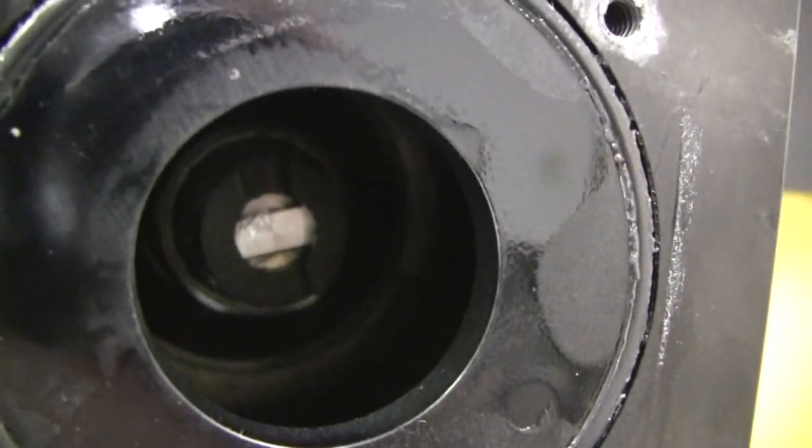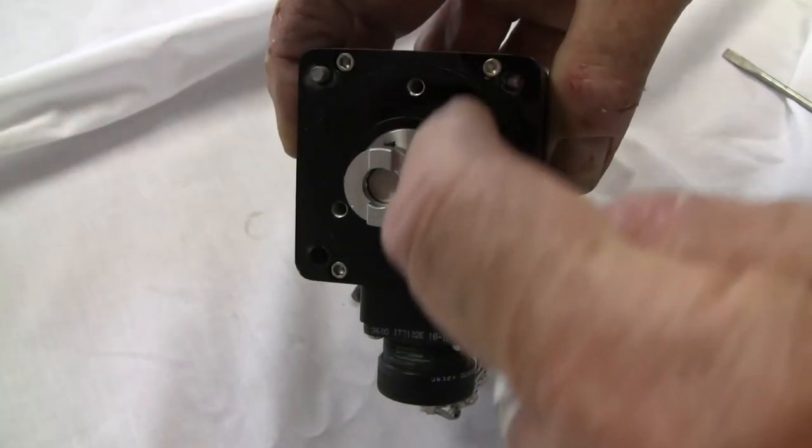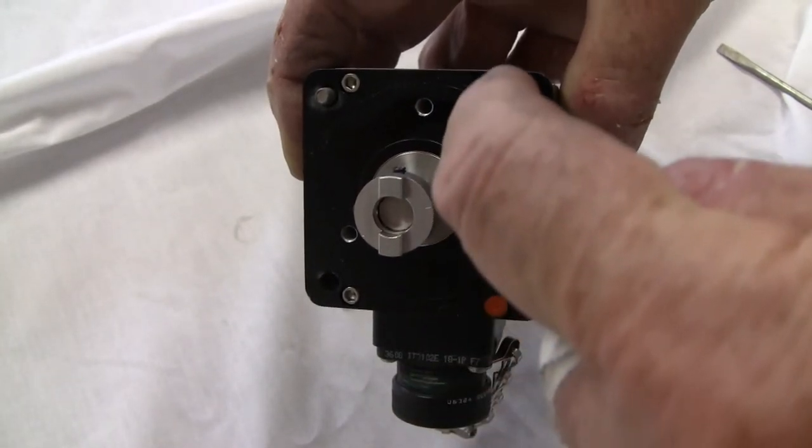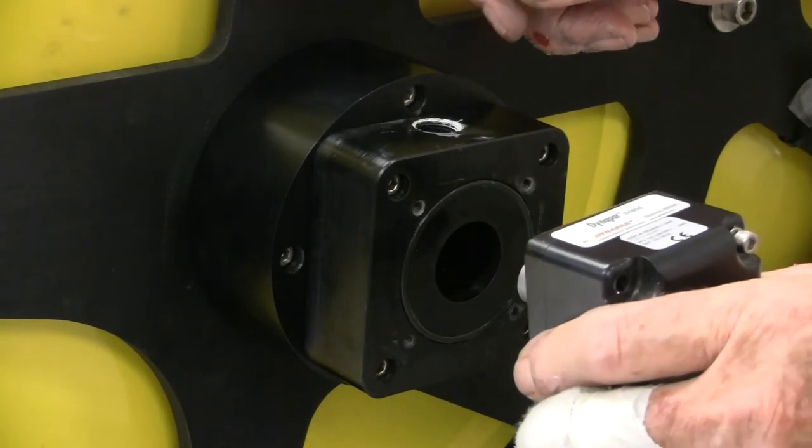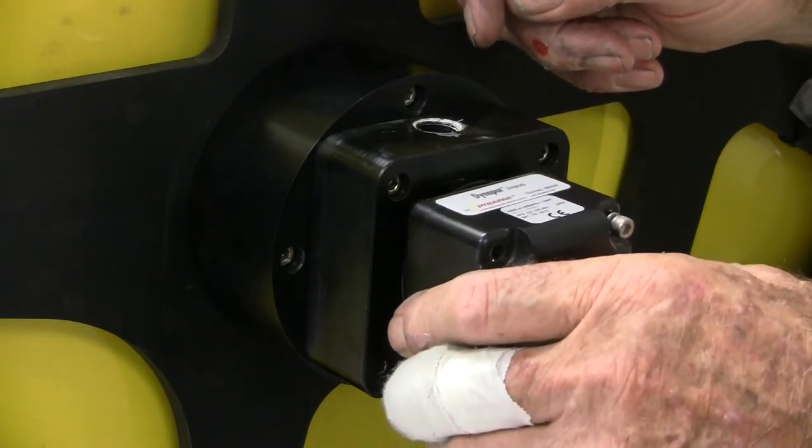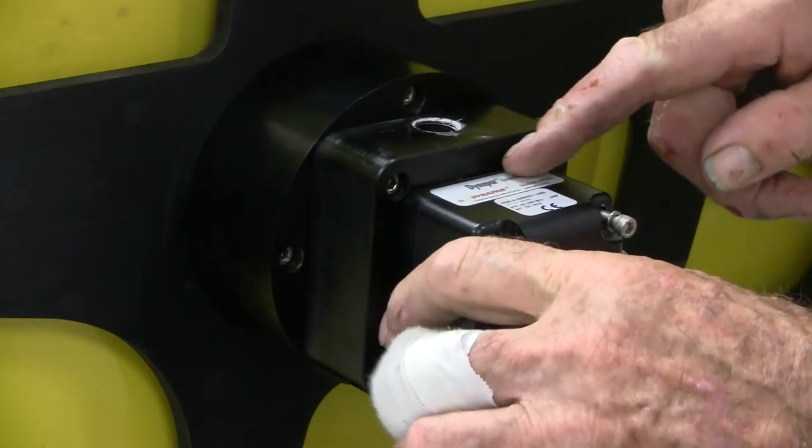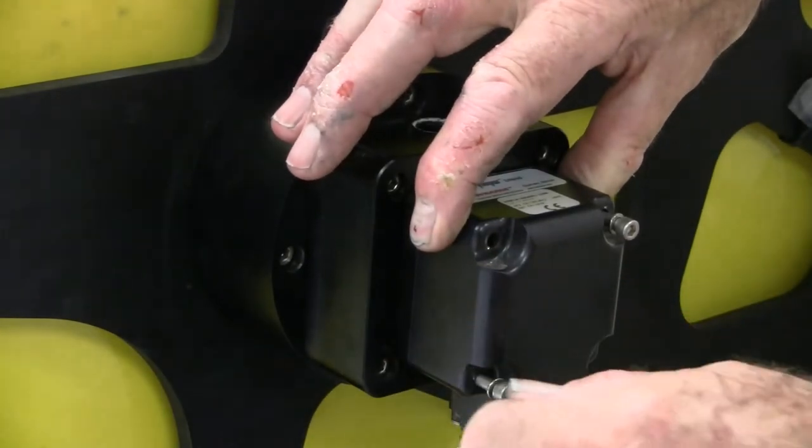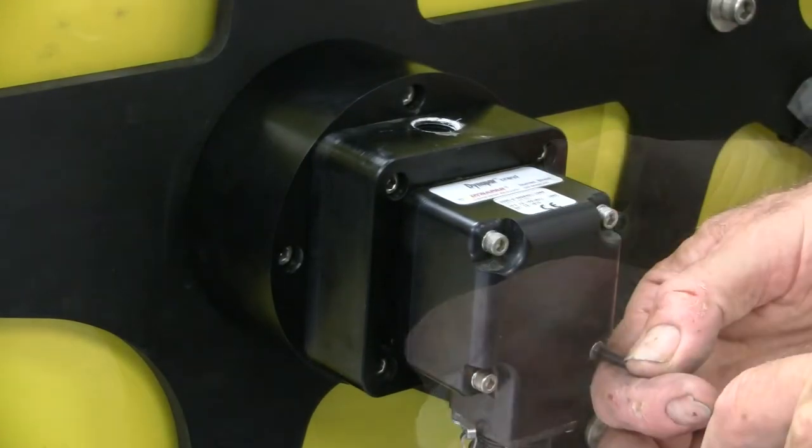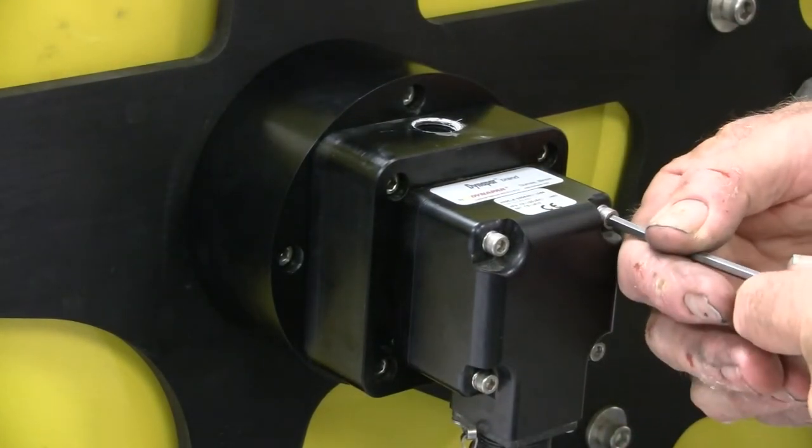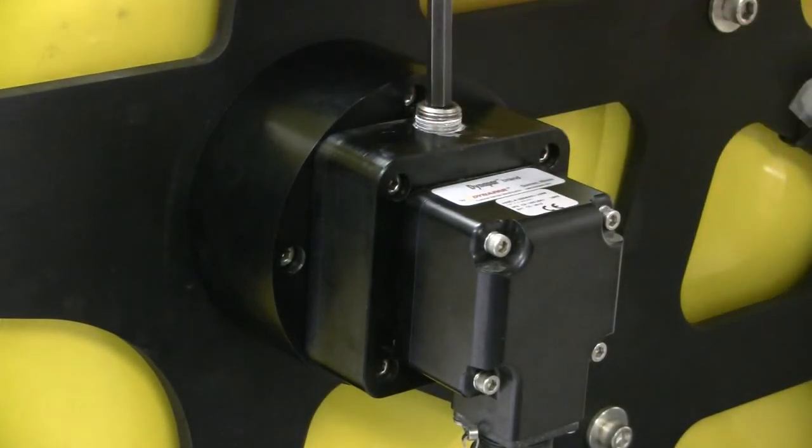Rotate the measuring wheel so that the tang on the coupling is horizontal. Rotate the other end of the coupler on the encoder to vertical. Replace the encoder while looking through the plug hole on top and rotating the measuring wheel as necessary to get the two parts of the coupling to mesh. Reinstall the four screws holding the encoder in place. Reinstall the plug in the adapter.